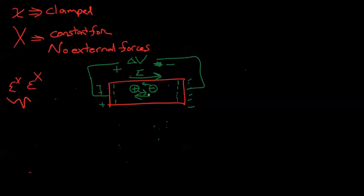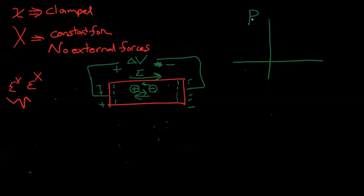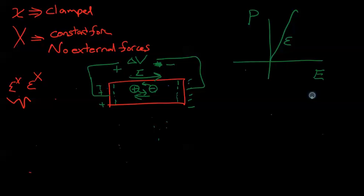From an external perspective, how do we define dielectric permittivity? Dielectric permittivity is defined by the linear relationship between polarization and electric field — how much polarization is produced for a given electric field. We can measure it, and the slope of that relationship is the permittivity.